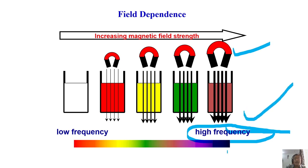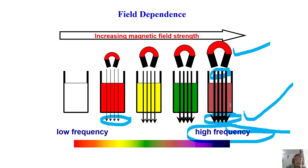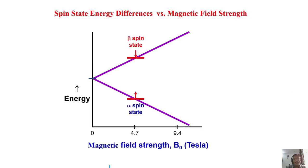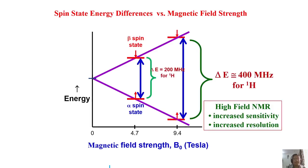As the magnetic field increases, not only does the resonating frequency increase, but also notice the thickness of the arrows in the diagram is increasing — meaning the sensitivity of detection also increases as the magnetic field goes up. Higher magnetic field gives more signal, higher sensitivity, and the resonating frequency keeps increasing linearly.